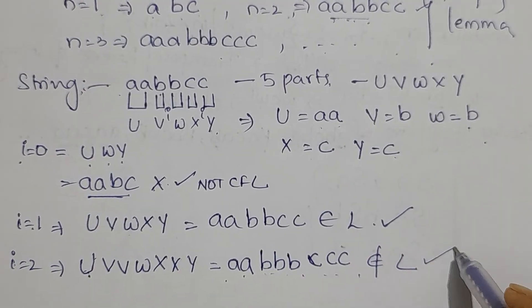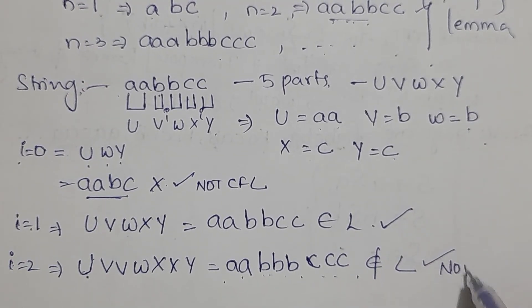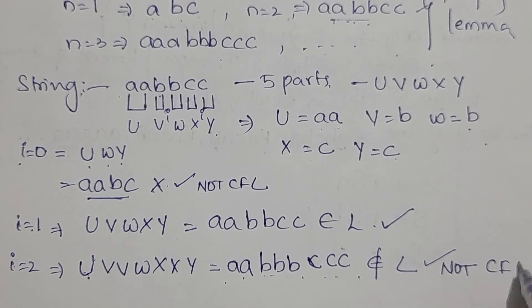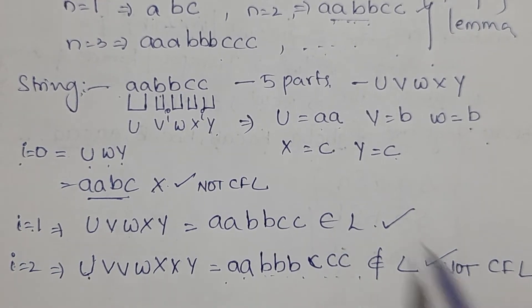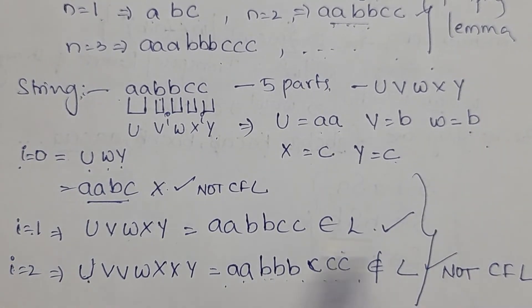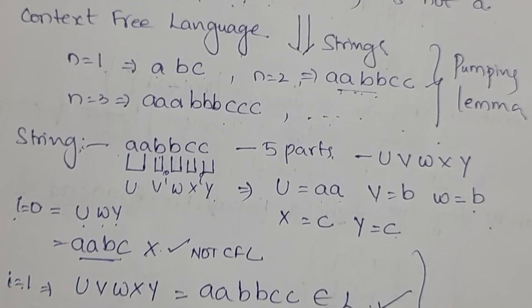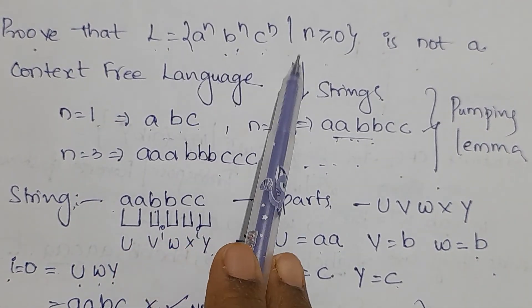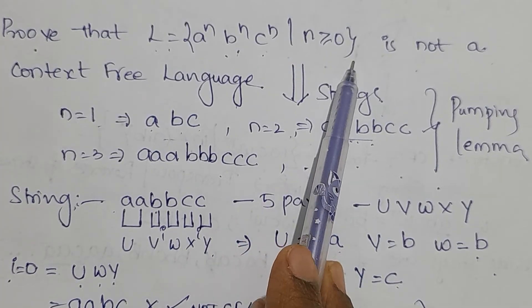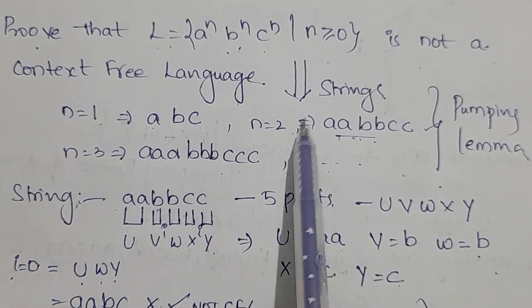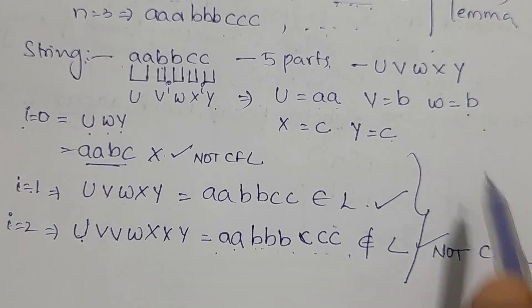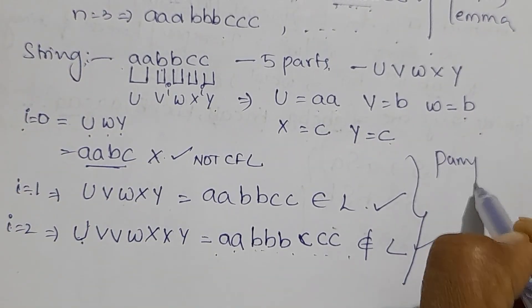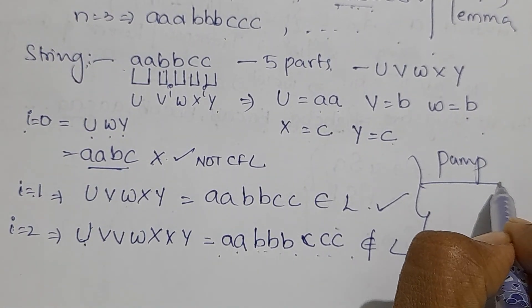Hence, you have proven that the given language L = {a^n b^n c^n | n ≥ 0} is not a context-free grammar according to the pumping lemma for CFGs.